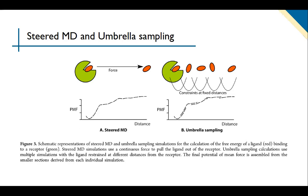There are two approaches to get the potential of mean force (PMF). A force is applied that pulls the ligand away from the protein. One approach is steered MD, and the other uses umbrella sampling. Both are used to calculate the average potential energy, but the first is conducted under non-equilibrium conditions, and the second uses a series of equilibrium simulations.